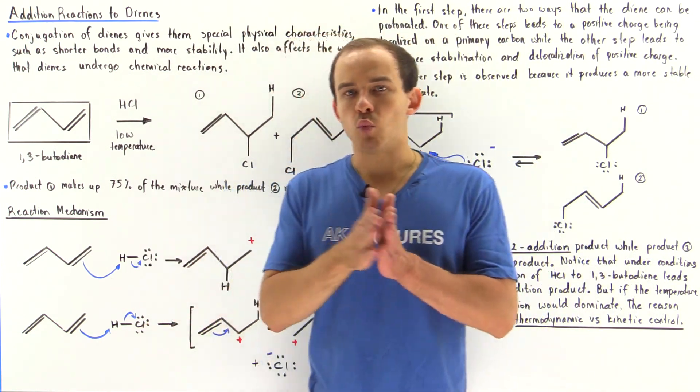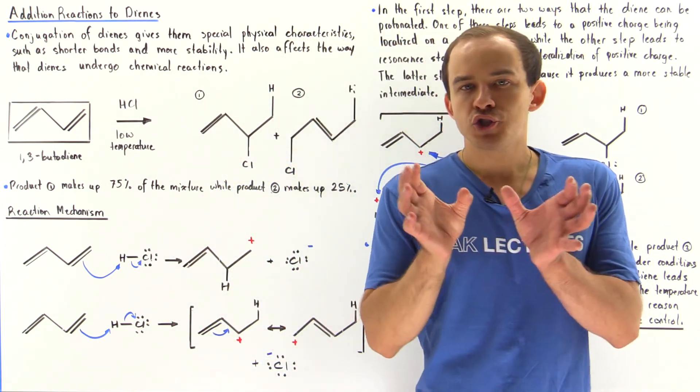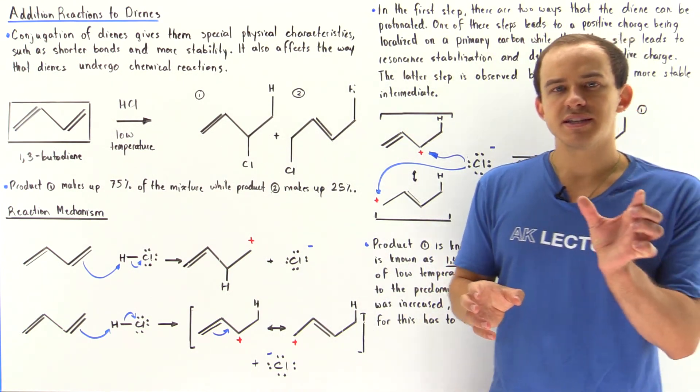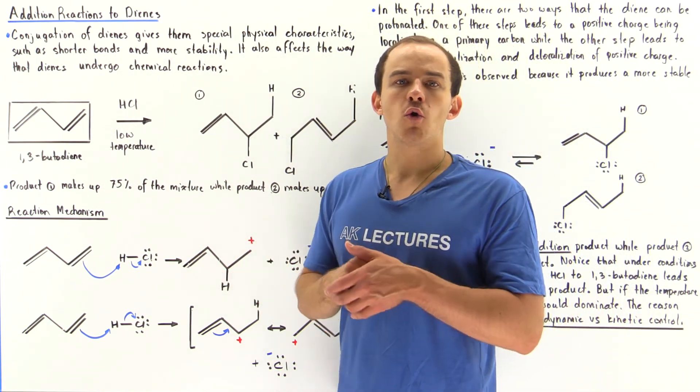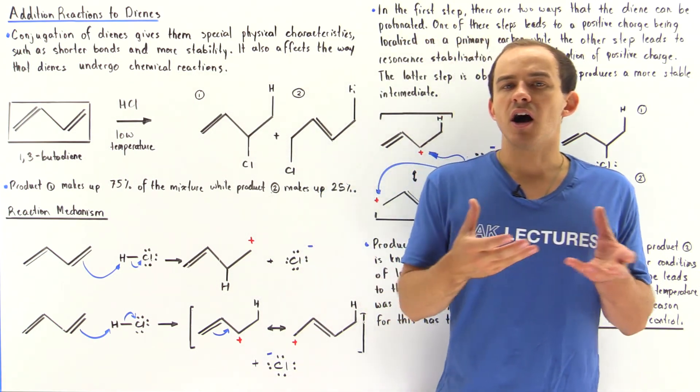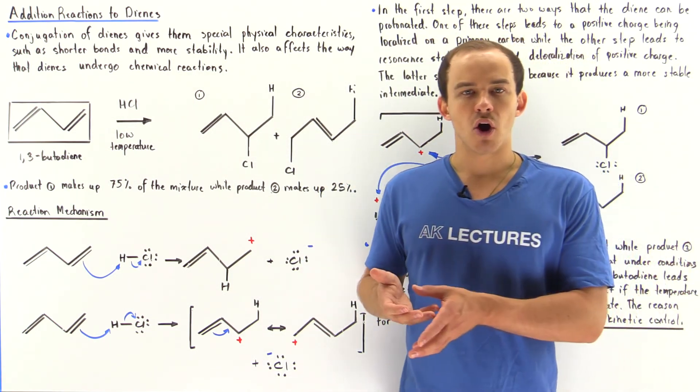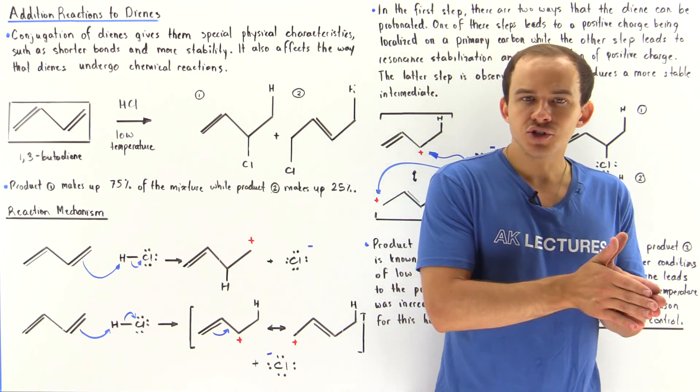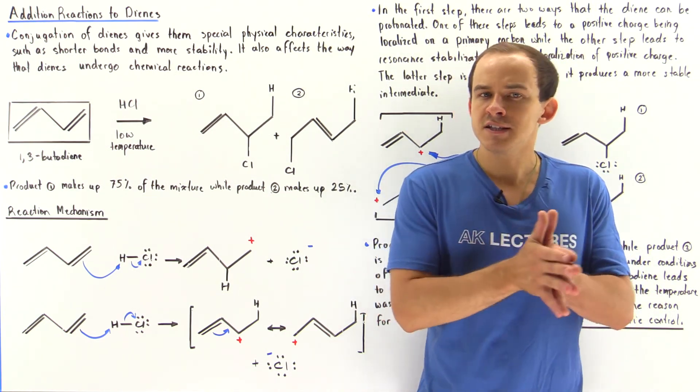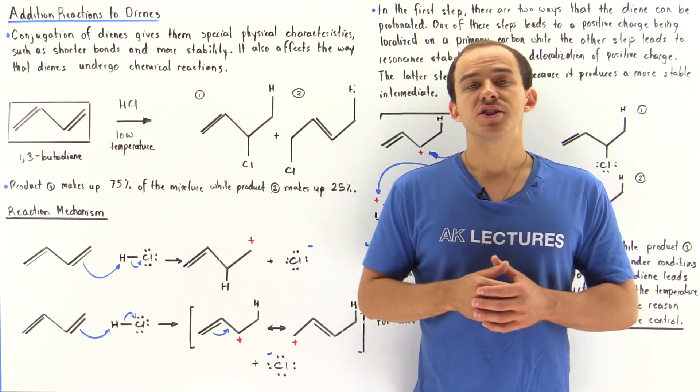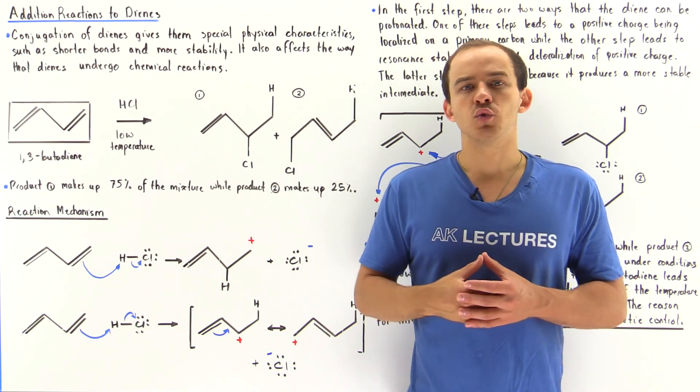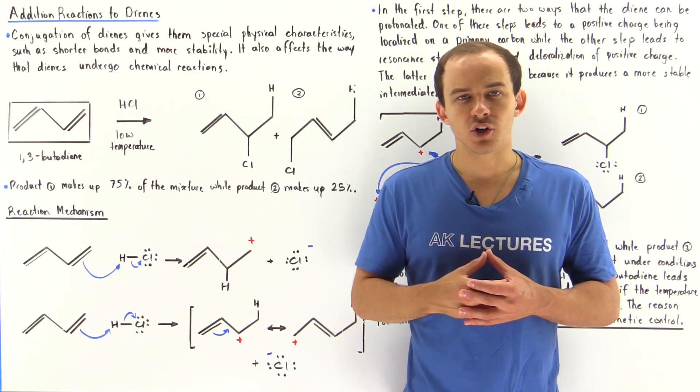Basically, our 1,3-dienes have shorter bonds between the second and third carbon, and they are more stable and lower in energy than their unconjugated counterparts. Now conjugation doesn't only lead to physical properties, it also affects the way that our diene molecule actually undergoes chemical reactions.